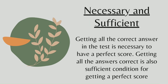Here is a statement for necessary and sufficient together. Getting all the correct answers in a test is necessary to have a perfect score. Getting all the answers correct is also a sufficient condition for getting a perfect score. It is both necessary and sufficient because there is no other way to get a perfect score without getting all the answers correct.